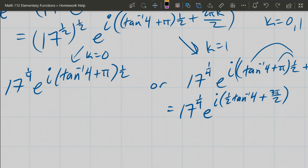And again, if you're going to convert these into a + ib form or Cartesian form, the way you're going to do that I recommend is use the cosine + i sine instead of the Euler e^(iθ) form.